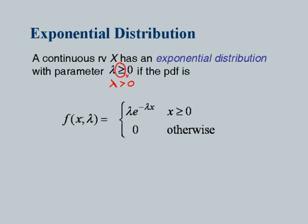We discussed the exponential distribution and the PDF of an exponential distribution for the parameter lambda is lambda e to the power minus lambda x, where x takes values greater than or equal to 0. We have already seen the various properties of exponential distribution in terms of the mean and variance.